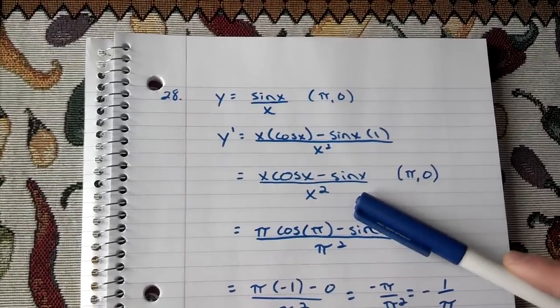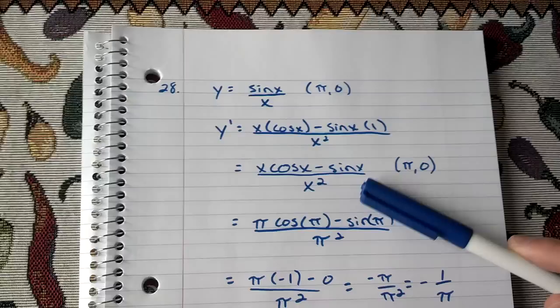From there, you can simplify it to x cosine x minus sine x over x squared.